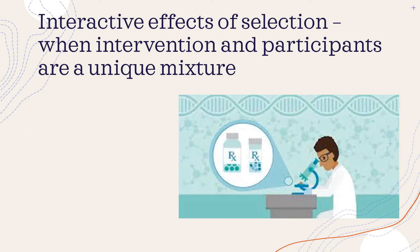The second threat is called interactive effects of selection. This happens when the intervention and participants are a unique mixture which cannot be found elsewhere. For example, external validity becomes risky because respondents are tested, surveyed, or observed and these respondents cannot be easily replicated or found — such as members of a tribe located in an Amazon forest which not every researcher will have access to.